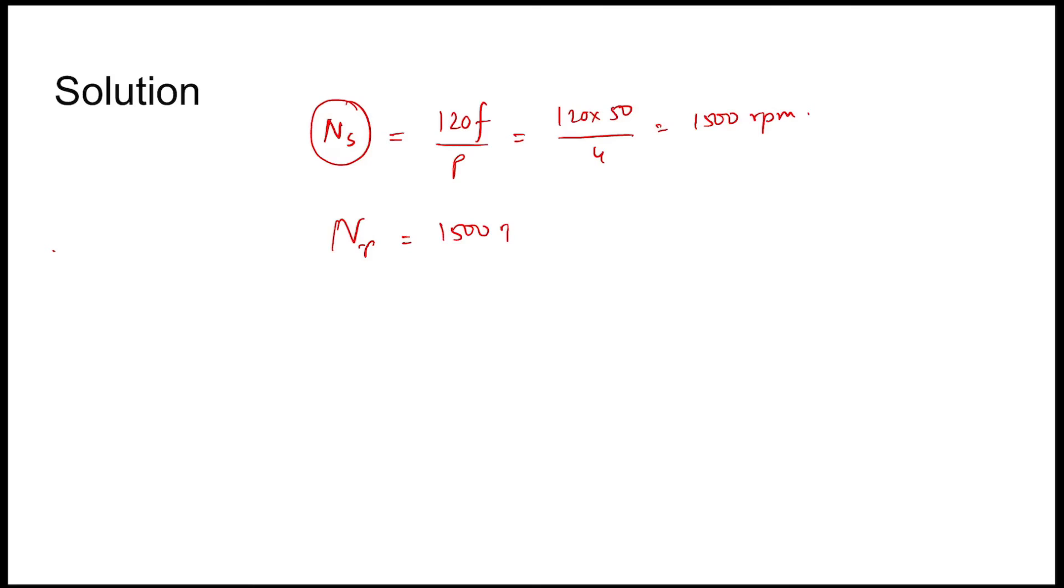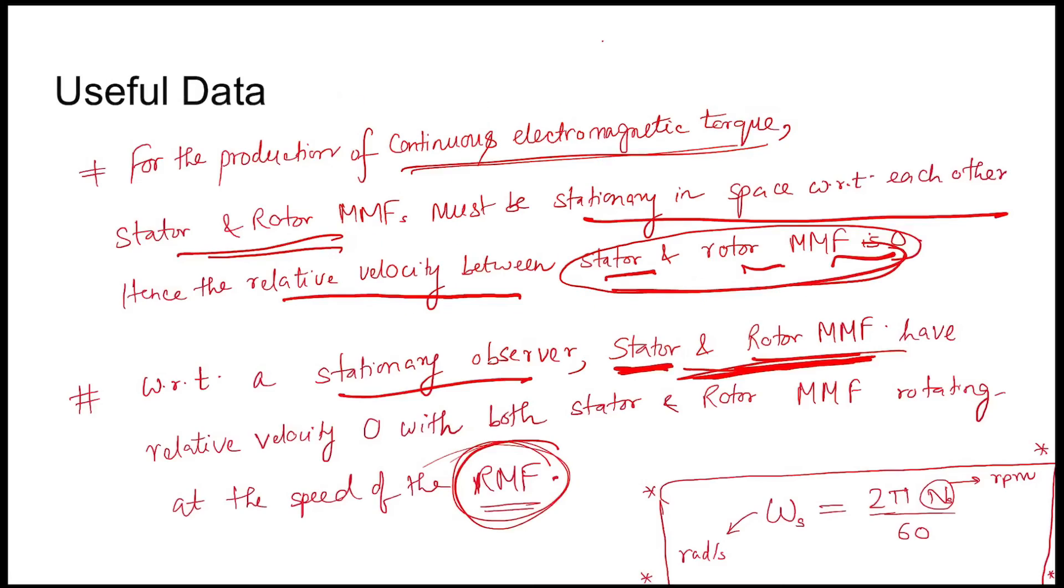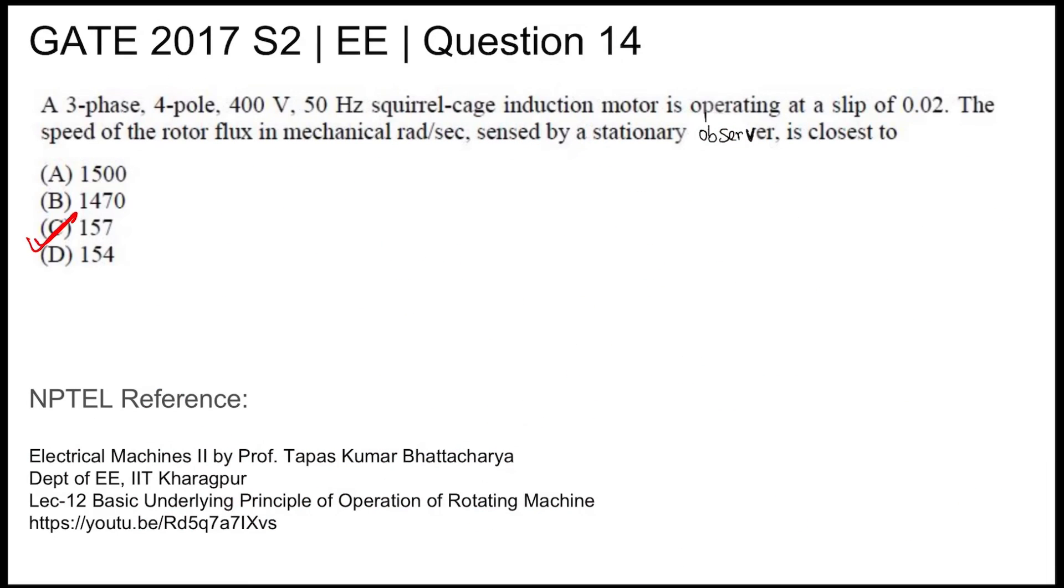In radians per second, omega r equals 2 times pi times n by 60, where n is in rpm. This is coming out to be 157 radians per second. So the answer is option C, 157 radians per second. Thank you.